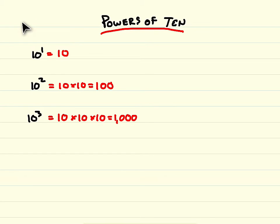So basically, the number of zeros behind the one should match the exponent. There's one zero behind the one, and our exponent is one. There's two zeros here behind the one, and your exponent is two. And there's three zeros behind the one here, and your exponent is three. These are your powers of ten and their values.